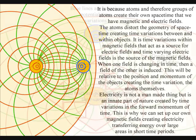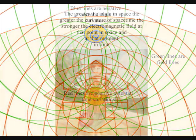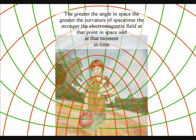It is time variations within magnetic fields that act as a source for electric fields, and time varying electric fields is the source of the magnetic fields. When one field is changing in time, then a field of the other is induced. This will be relative to the position and momentum of the objects creating the time variations, the atoms themselves.